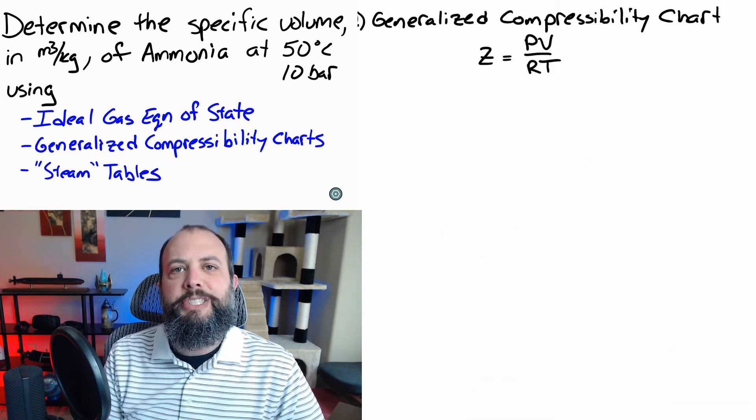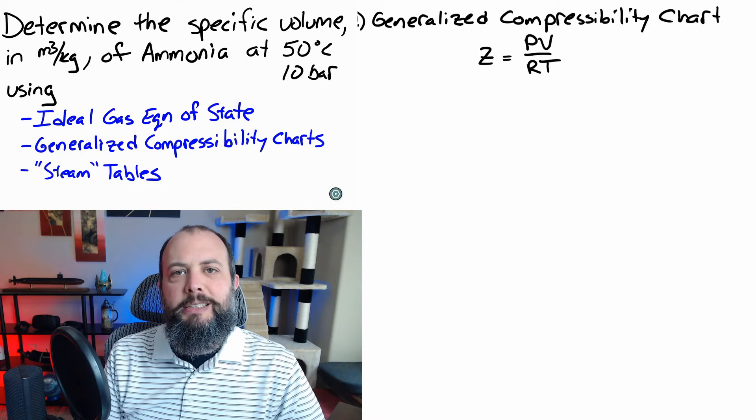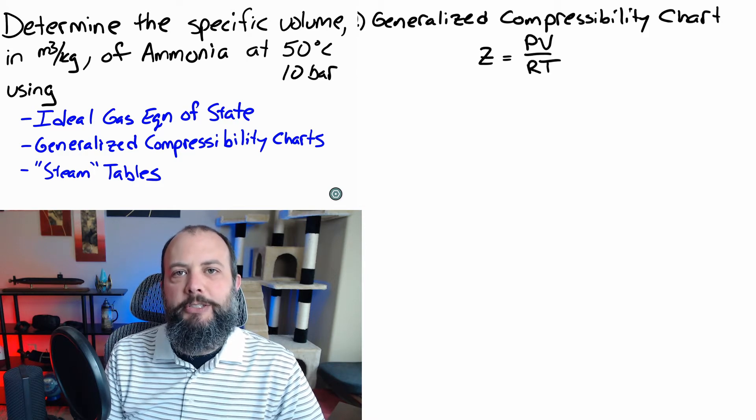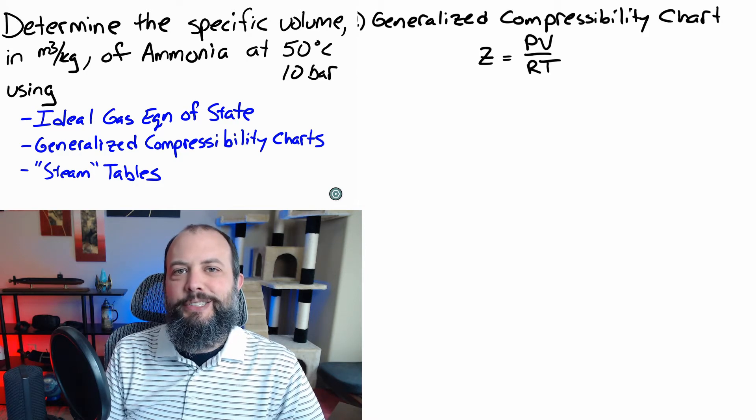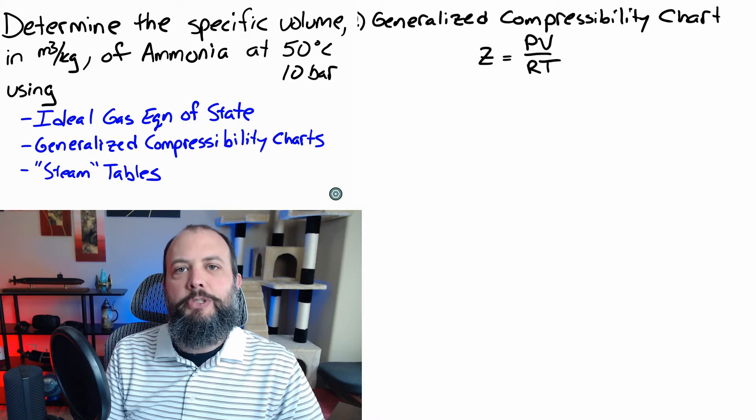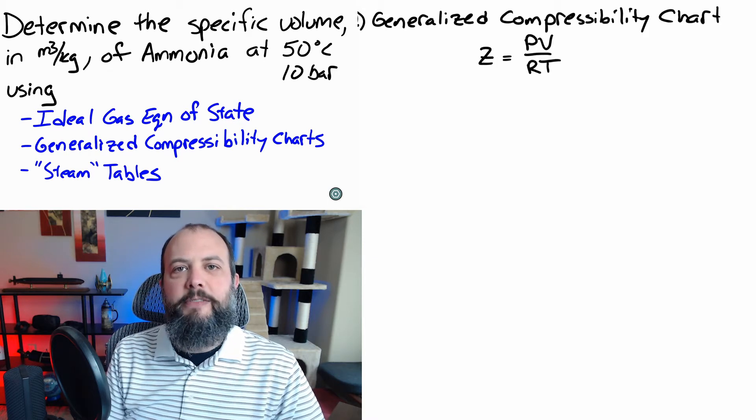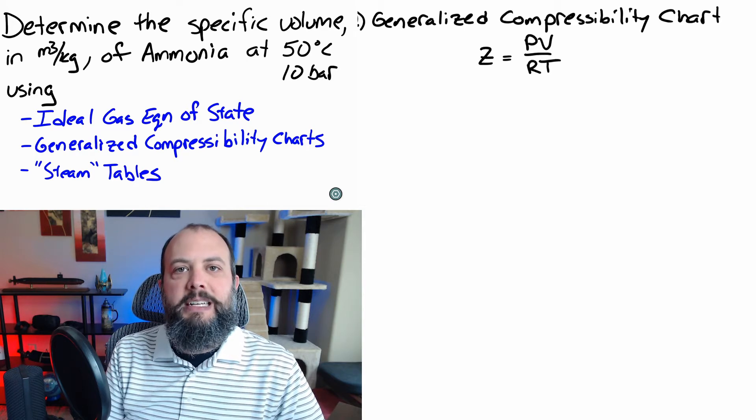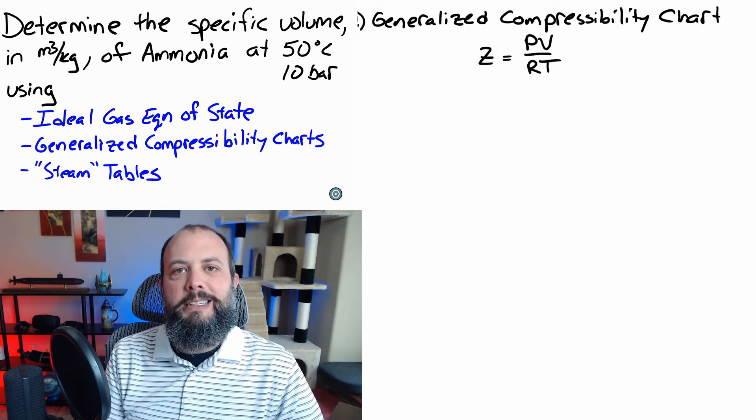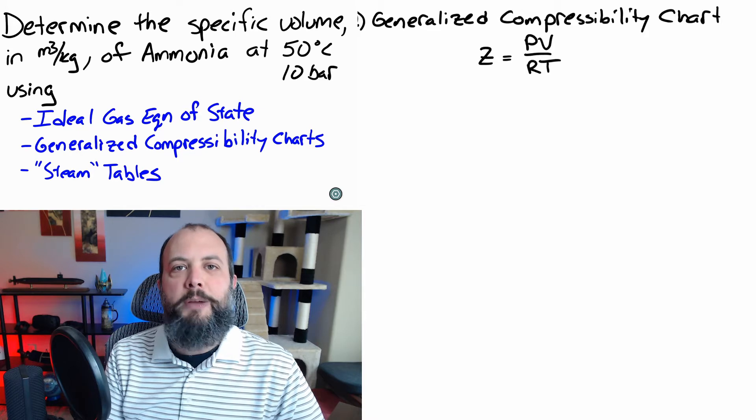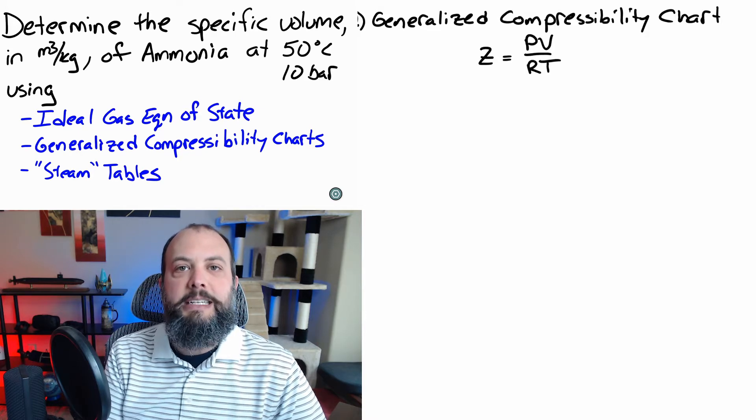Solution 2 will use the generalized compressibility chart. This should look very similar to the ideal gas law. The value z is essentially a scaling factor that shows how close to ideal your substance is behaving. A z value of 1 would be perfect adherence to the ideal gas law. A z value that differs further from 1 means your behavior is further from ideal gas behavior.